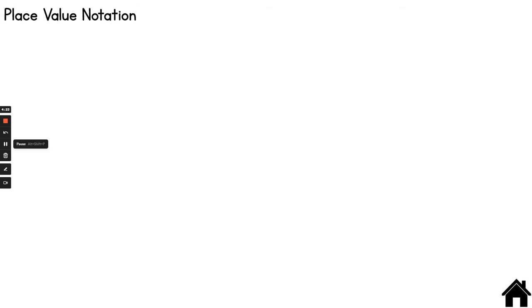With place value notation you are also going to be expanding your number out. So 45 is 10, 20, 30, 40, 41, 42, 43, 44, 45. With place value notation tens are represented with sticks. Ones are represented with circles.